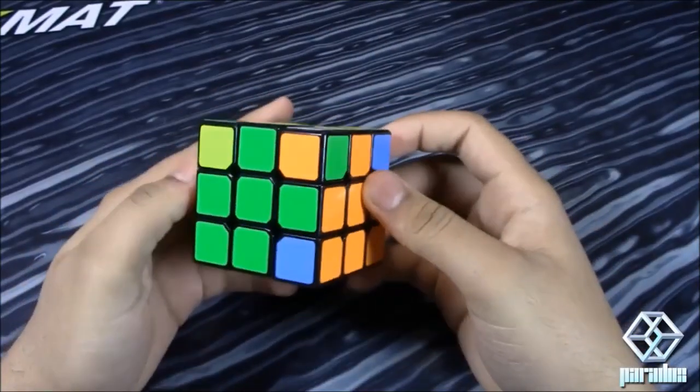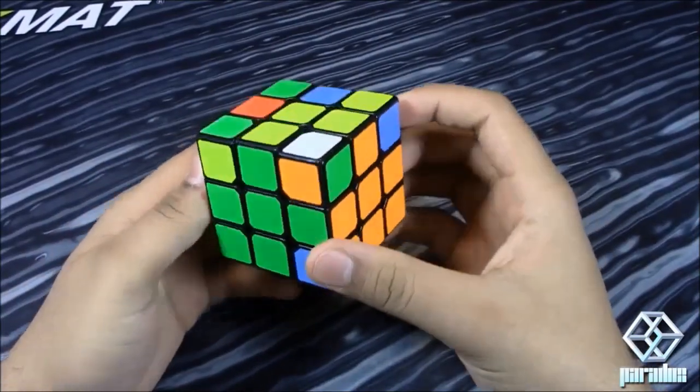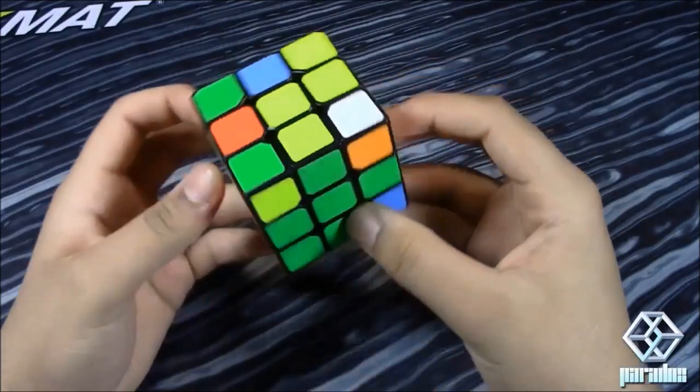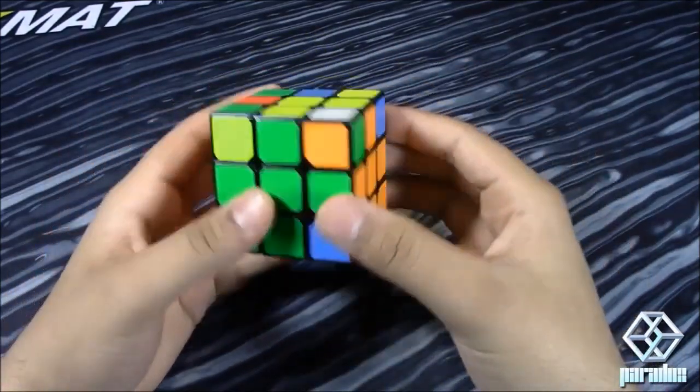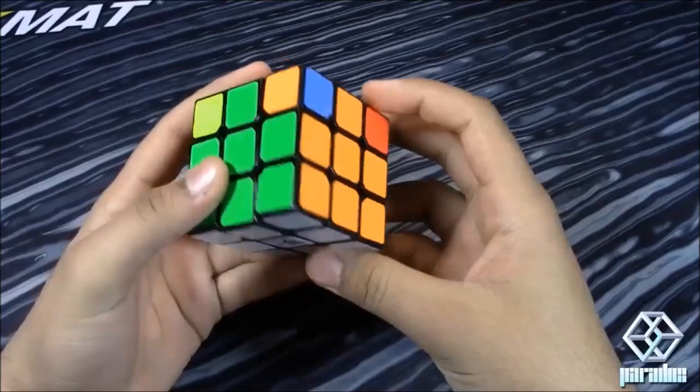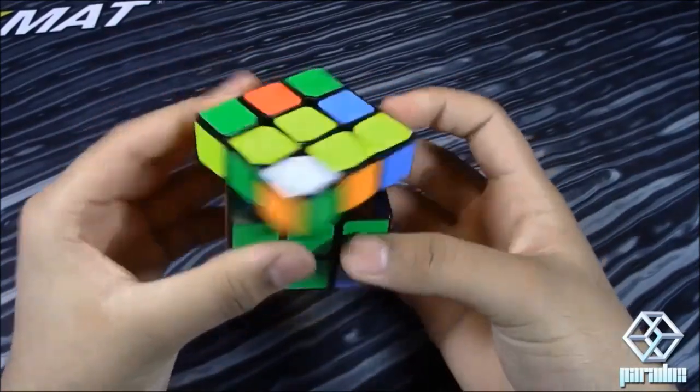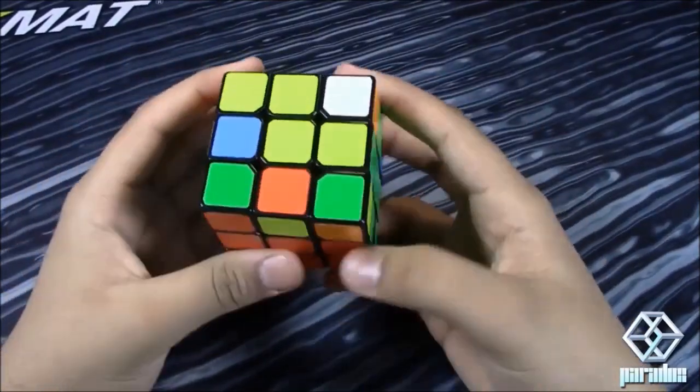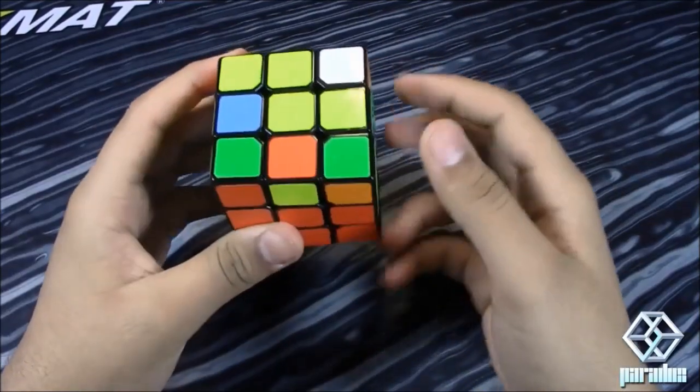So the first thing you can do is, of course, do the algorithms in a different angle. For example, this case is just a really simple trigger, like this, but you can also do this in a different angle and avoid the cube rotation.